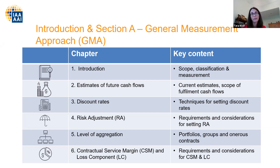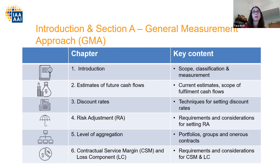Chapter four moves into developing the risk adjustment, which is a relatively new component of the valuation model. If you had Solvency II, you may have been accustomed to a risk margin before, but a risk adjustment for non-financial risks is a new element. There are a number of acceptable approaches discussed within the note. It's not comprehensive in terms of all allowable models, but it does talk about the common ones and gives good direction about emerging practice around risk adjustment calculations.